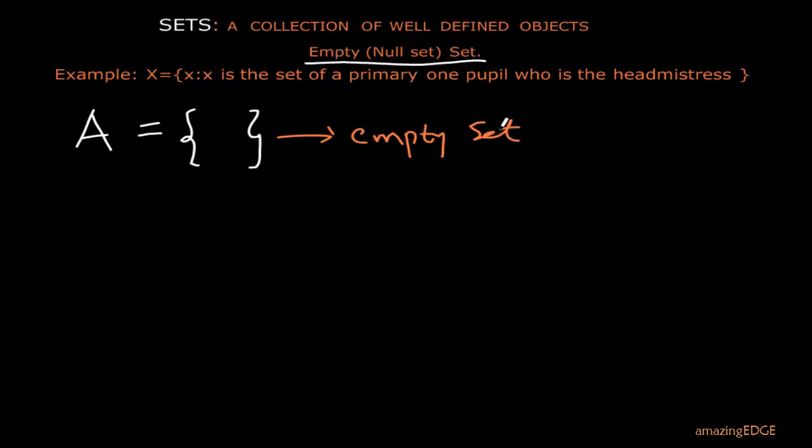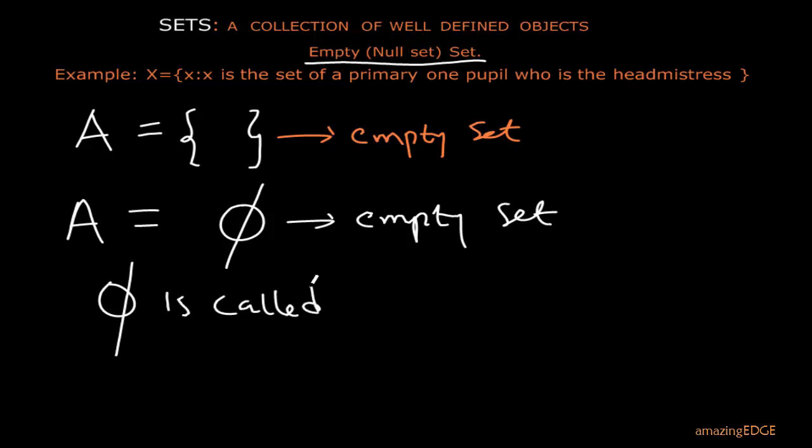Then another way to represent this is this. We can also use a symbol and call it phi. So A can be equal to this. So this means, again, an empty set. This is a symbol to represent an empty set. And this phi, this thing, is called phi. Now that symbol is known as phi. If you're interested in the name, we call it phi. So look at an example now.